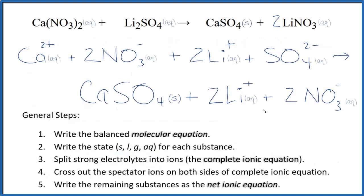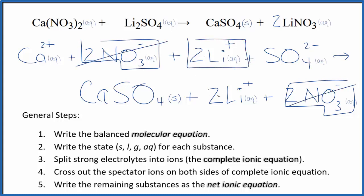Now we can cross out the spectator ions. They're on both sides of the complete ionic equation. On the top we have the reactants, down here products. In the reactants we have these two nitrate ions. We also have two nitrate ions in the products. Those are spectator ions, we're going to cross those out. Two lithium ions, again in the products. Spectator ions, cross them out. What's left, that's the net ionic equation for Ca(NO3)2 plus Li2SO4.